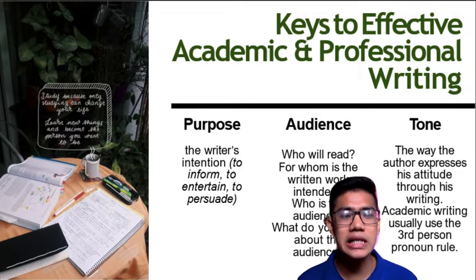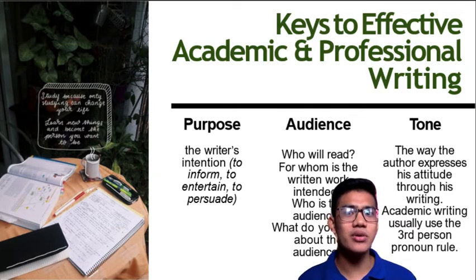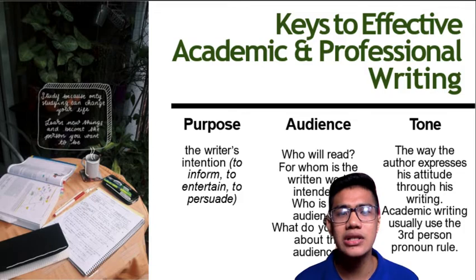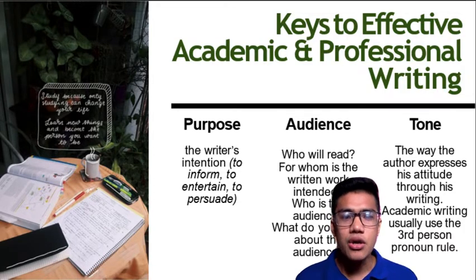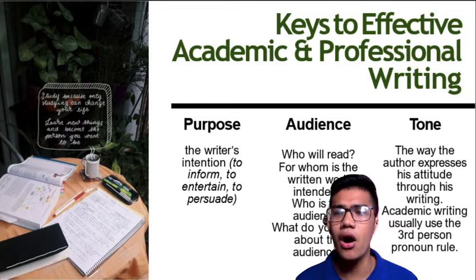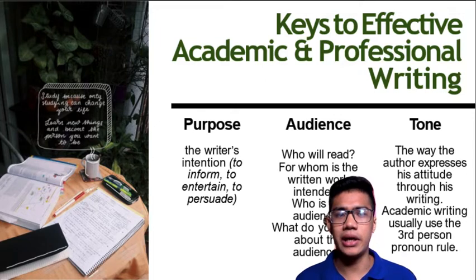The next key element is tone — the way the author expresses attitude through writing. Academic writing, for example, uses the third person pronoun rule. We do not use 'he,' 'she,' or 'I' in academic writing; we seldom use these pronouns. So to recap, the keys to effective academic and professional writing are: purpose, audience, and tone.